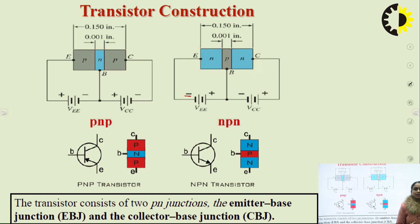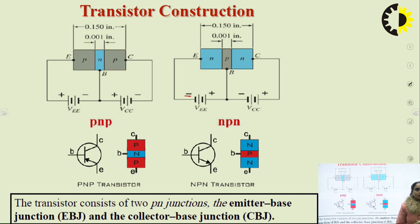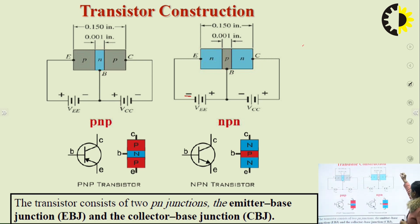Now let's talk about the doping level and area of emitter, base, and collector in terms of physical construction — which occupies the largest area, which is smallest, which is thinnest, and which is moderate in size.